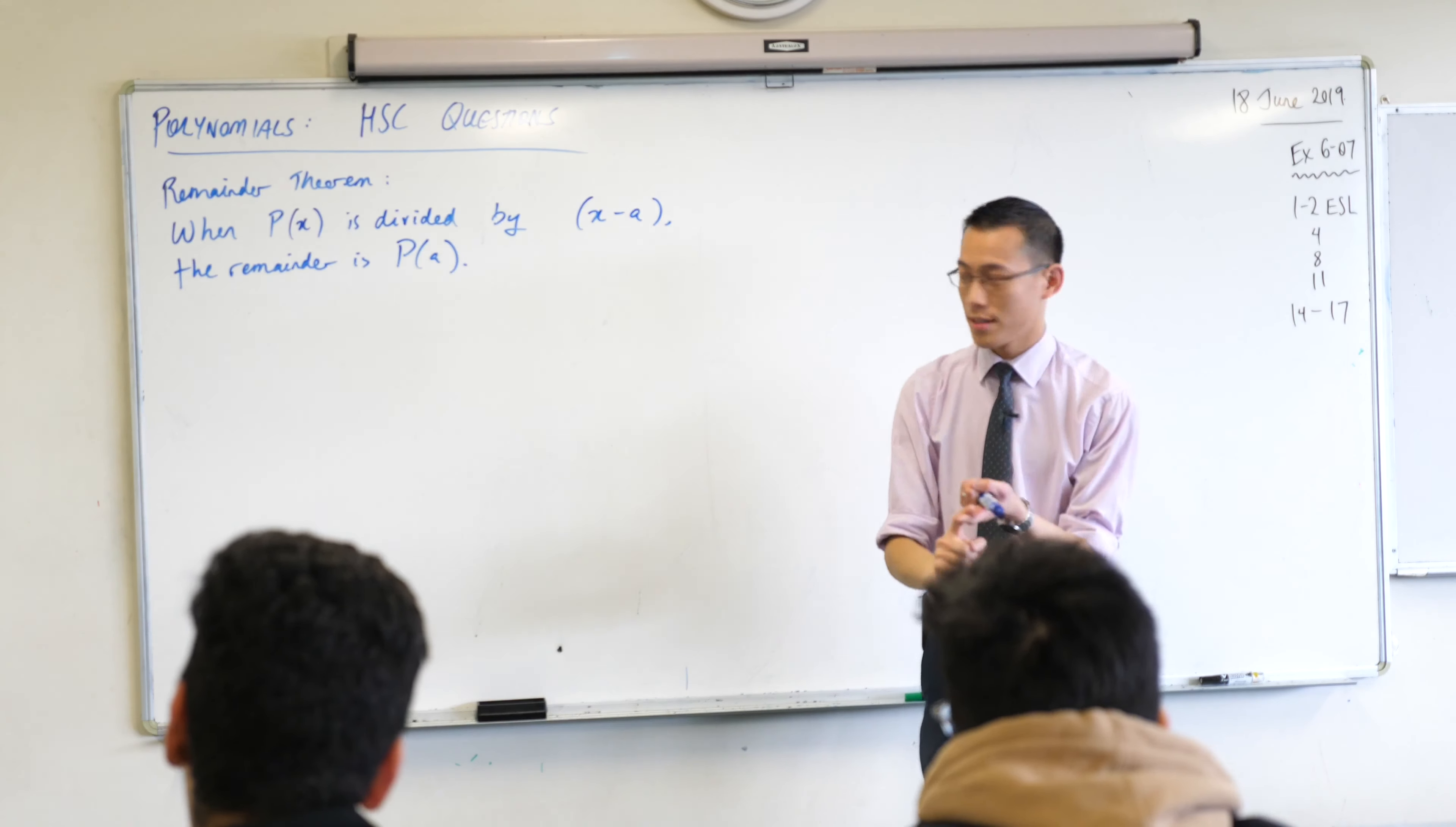Part 1 says find the value of B, which is that very last bit along the end. Now when you look at it, they've said P(x) in a really weird way - they said P(x) is equal to, and then they've got (x-3), so the two factors that they mentioned, then Q(x).